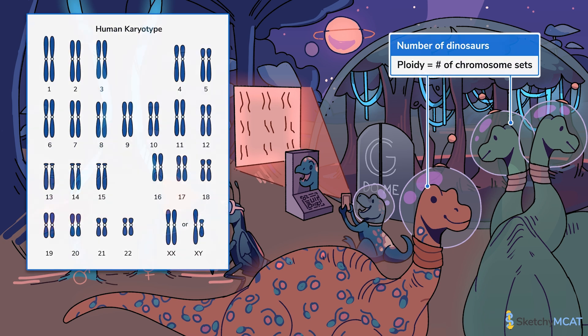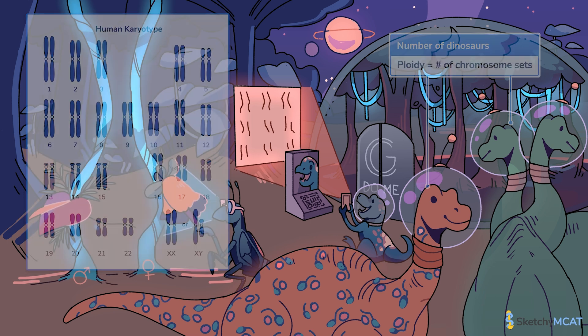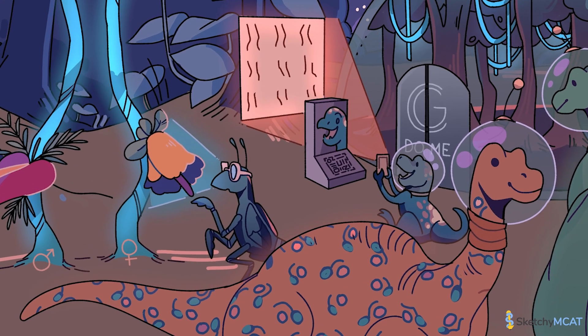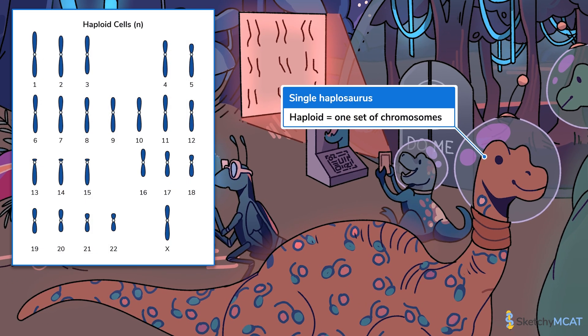The number of chromosome copies in a cell is called its ploidy. Since humans have one pair of homologous chromosomes, they have two complete chromosomal sets. In humans, there are 22 of these homologues present, plus two sex chromosomes, totaling 46 chromosomes in the human genome. Haploid cells only have one complete set of chromosomes — no copies, no pairs, just one set of chromosomes — which means one allele per gene.